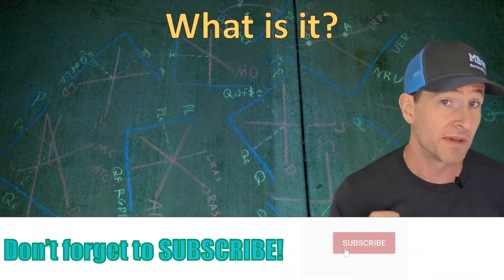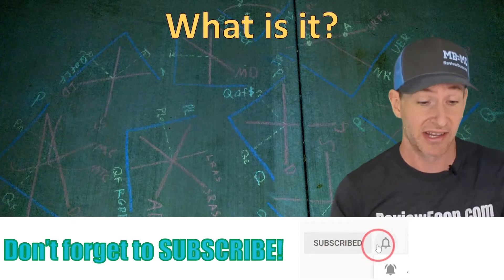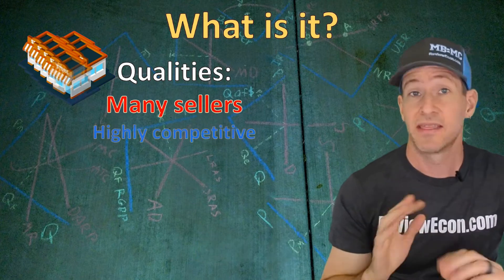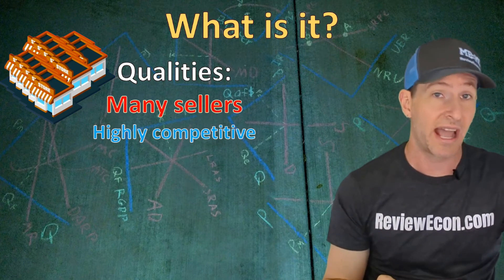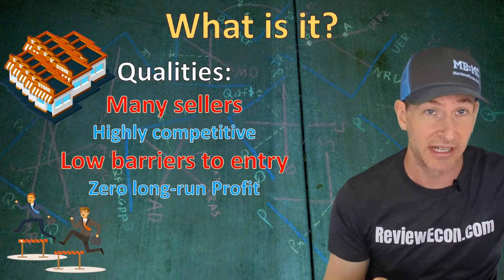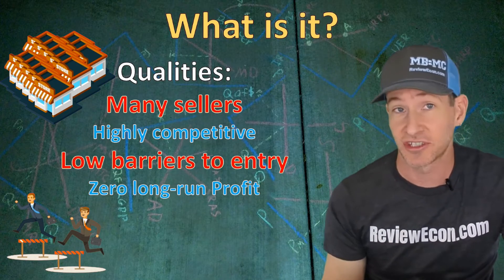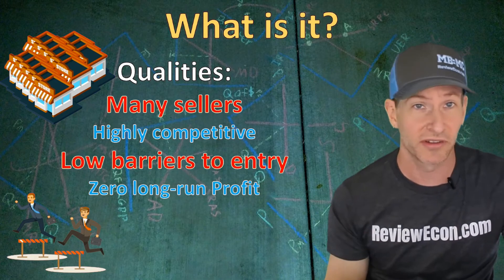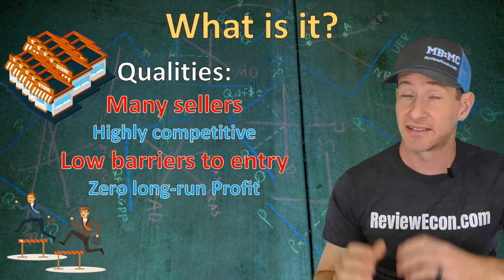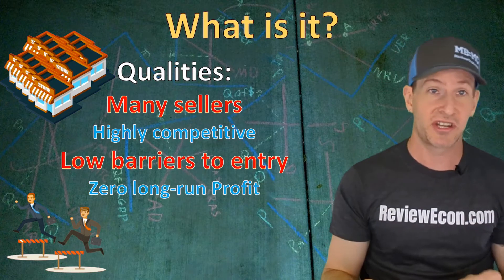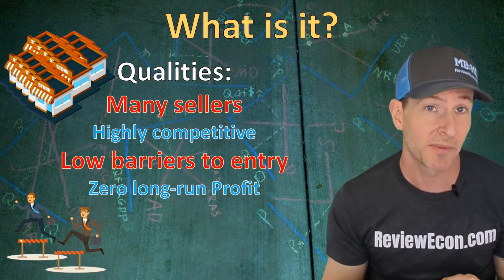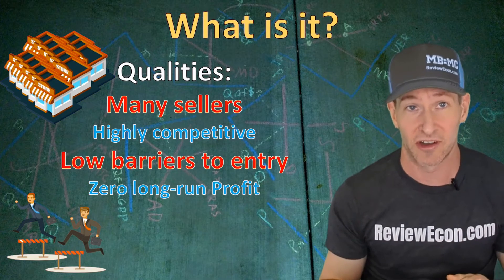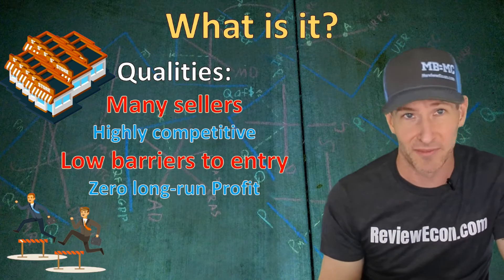First we need to talk about what monopolistic competition is. The qualities of a monopolistically competitive market include many sellers within the market, meaning it is highly competitive. We are also going to have very low barriers to entry — barriers to entry being anything that makes it difficult to start a business and enter the market, such as high startup costs, customer loyalty, or government regulations. Since there are low barriers to entry, we are going to have zero economic profit in the long run, meaning firms break even or earn a normal profit in the long run. In that regard, it is similar to perfectly competitive markets.